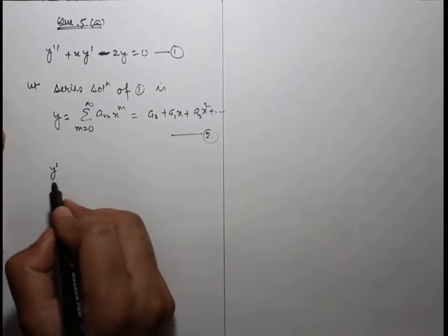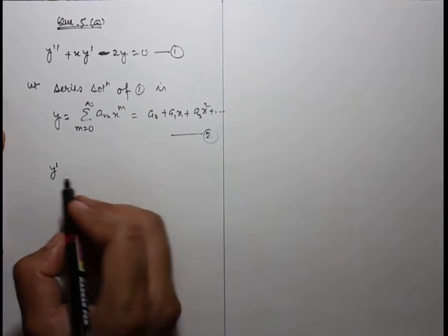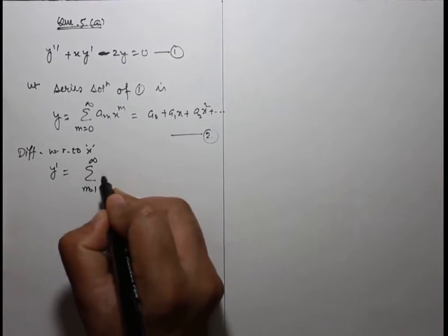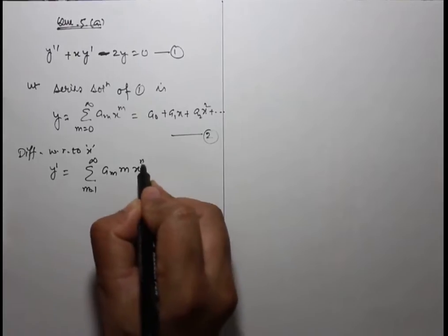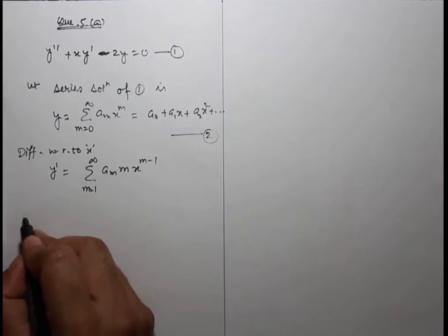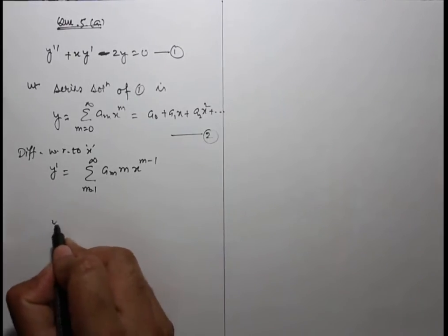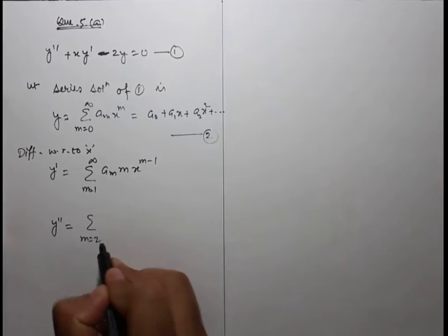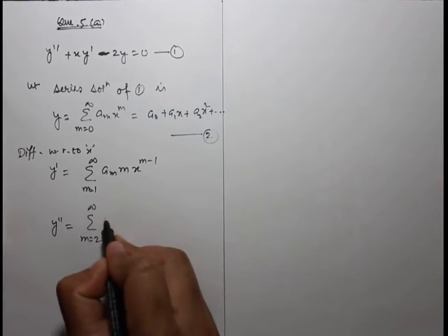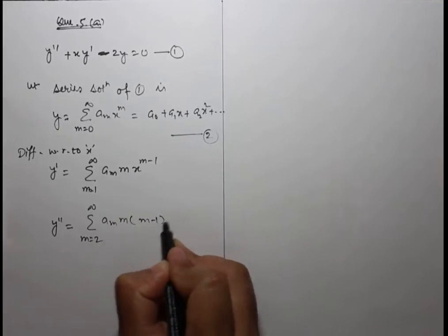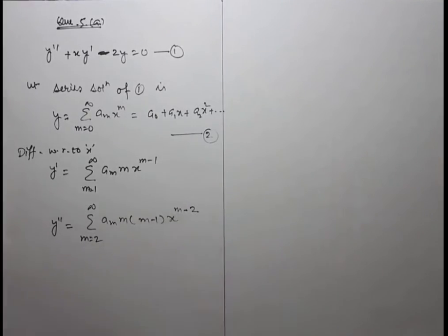Differentiating with respect to x, y' = Σ(m=1 to ∞) a_m x^(m-1). Differentiating again, y'' = Σ(m=2 to ∞) a_m m(m-1) x^(m-2).